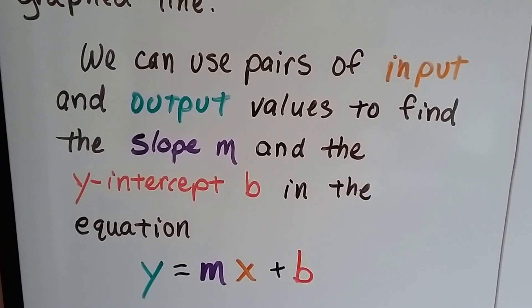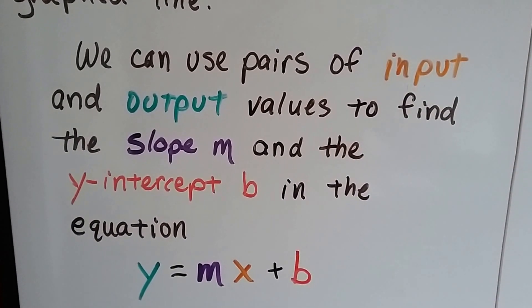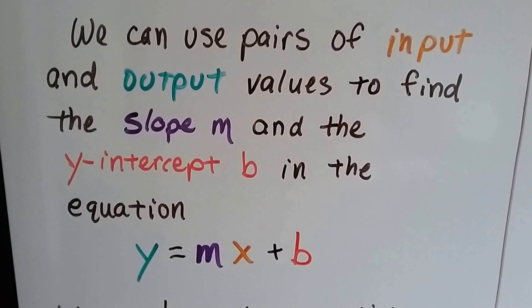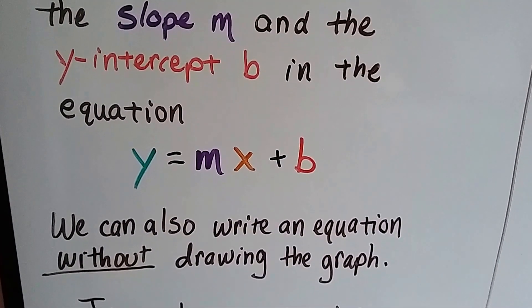We can use pairs of input and output values to find the slope m and the y-intercept b in the equation y equals mx plus b.